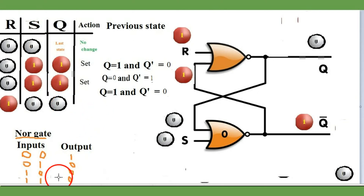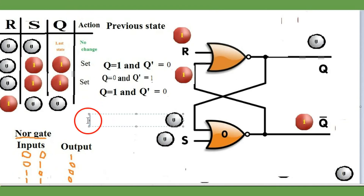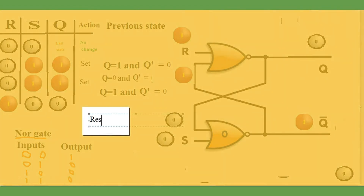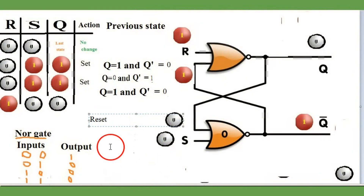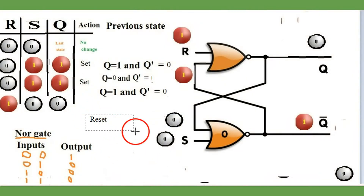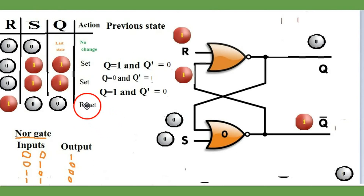When Q is 0 and Q-bar is 1, that is called reset. There is no problem — whatever the previous state exists, Q will be 0 and Q-bar will be 1. That is called reset.